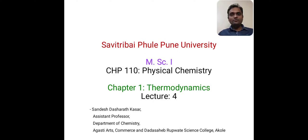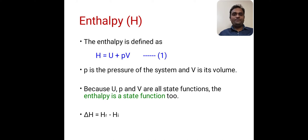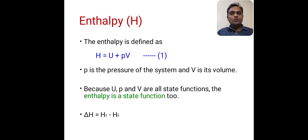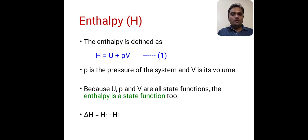Welcome to the fourth lecture of thermodynamics. Today we are going to study the point enthalpy. The enthalpy is defined as H is equal to U plus PV. U is equal to internal energy, P is the pressure of the system, and V is its volume. So H is equal to U plus PV — this is the definition of enthalpy.